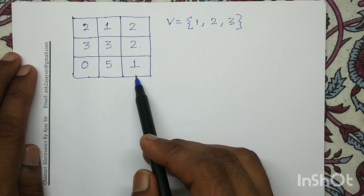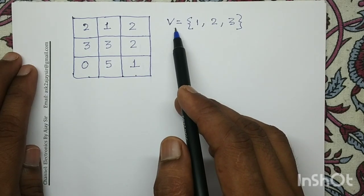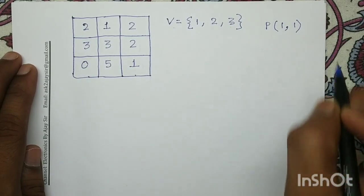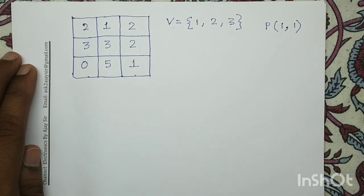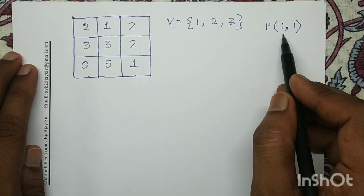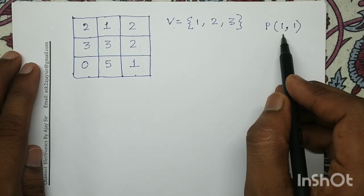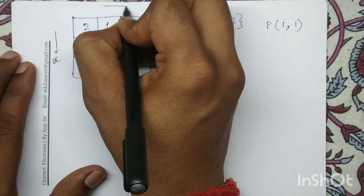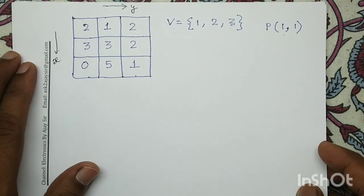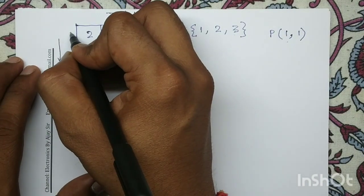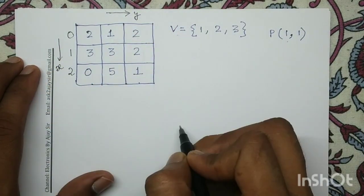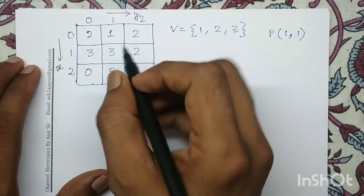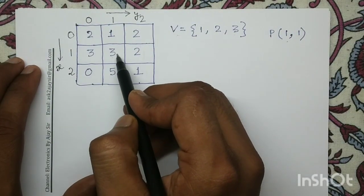This is our input digital image. The V set consists of three gray levels: 1, 2, and 3. For pixel P having the coordinate (1,1), we will identify this pixel by marking the axes. Along the positive X direction, indexing starts from 0: 0, 1, 2. Along the positive Y direction, indexing is also 0, 1, 2. So (1,1) gives us pixel P.